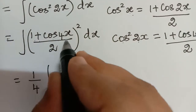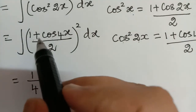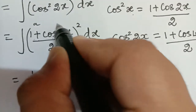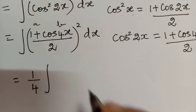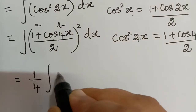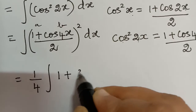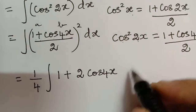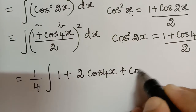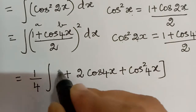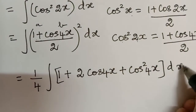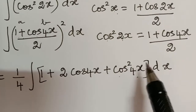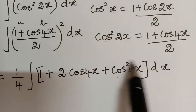Now (1 + cos4x)² can be expanded using the (a + b)² formula, where a = 1 and b = cos4x. So it expands to: 1² + 2(1)(cos4x) + cos²(4x), which is 1 + 2cos4x + cos²(4x) dx.